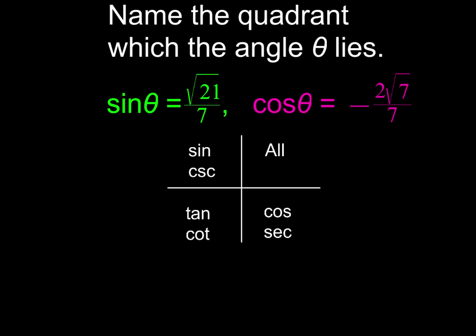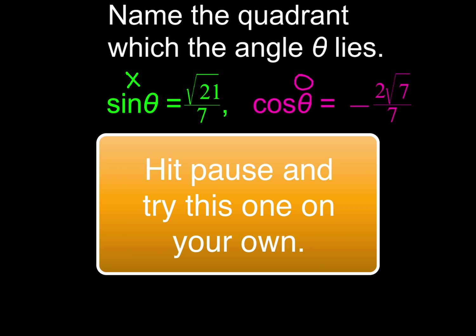Name the quadrant which the angle theta lies. Sine theta is root 21 over seven. Cosine theta is negative two root seven over seven. Oh gosh, don't freak out. Again, just go to x's and o's. So you got x's for sine, you got o's for cosine, and what you're going to do is just put an x and an o in each one of the quadrants where those conditions are each true. So go ahead and try this one on your own. Hit pause. Come on back and see if you filled this one out correctly.